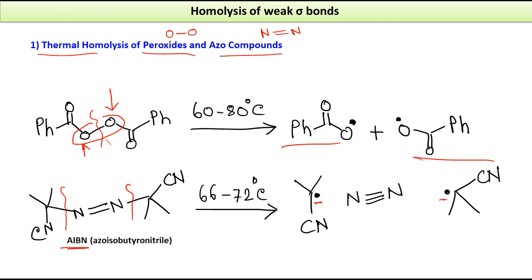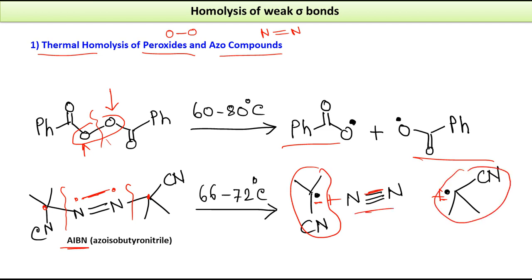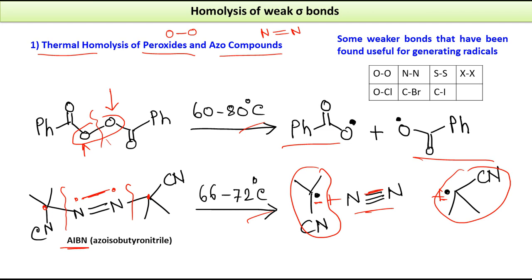In AIBN, the carbon–nitrogen bond is broken. Single electrons are produced on the two carbons, while the two electrons on the nitrogen pair up to form a new N₂ molecule. This gives two identical carbon-centered radicals plus nitrogen gas. The temperature required is not very high, making thermal homolysis very practical for peroxides and azo compounds.